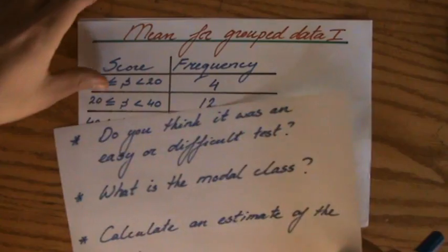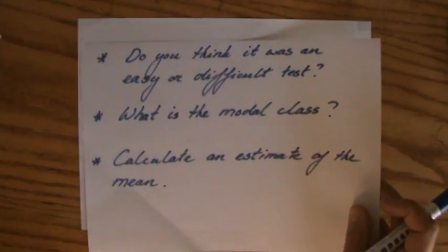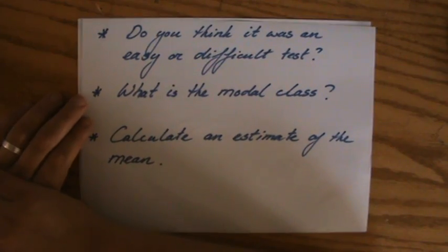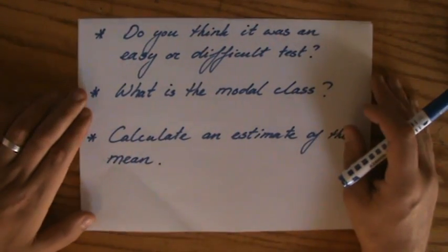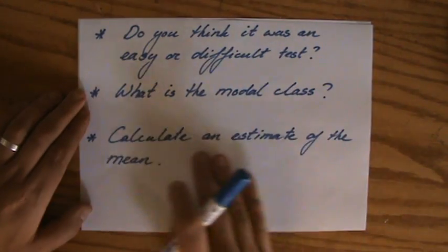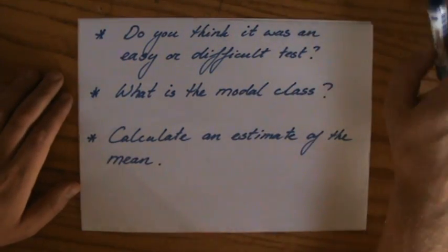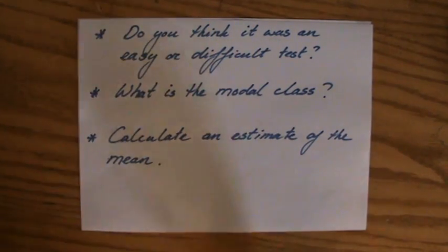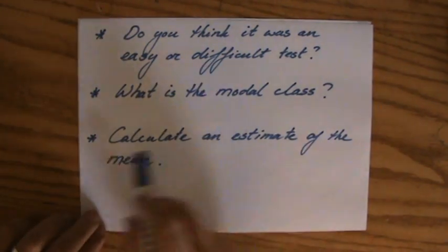And the types of questions you can get, and I'll get this table back in a minute, is do you think it was an easy or difficult test? So you have to interpret that diagram. What is the modal class? And calculate an estimate of the mean. And especially that question is very important, of course.